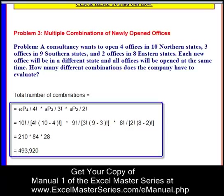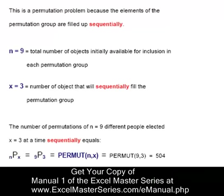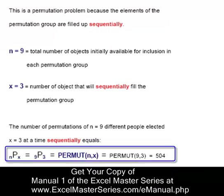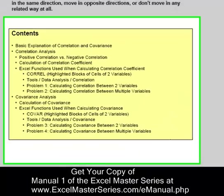We don't waste your time with any academic theory — just problem-solving steps to make you an Excel statistical master quickly. Here's a typical problem on permutations. Once again, it's just one line of code that solves that problem. If you didn't know Excel, you'd have to do quite a bit of additional math. Excel saves you a huge amount of time.